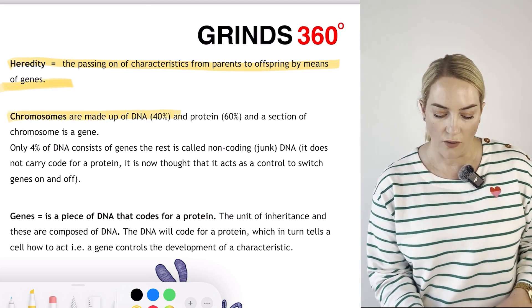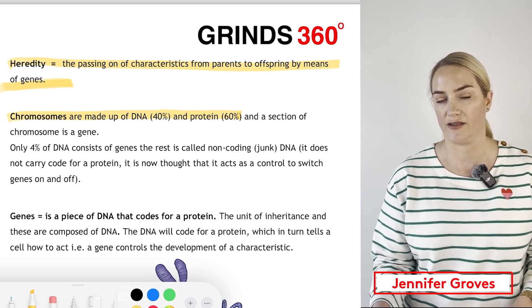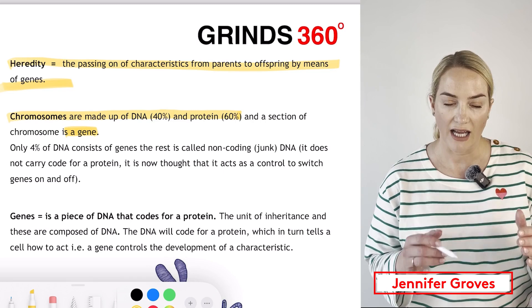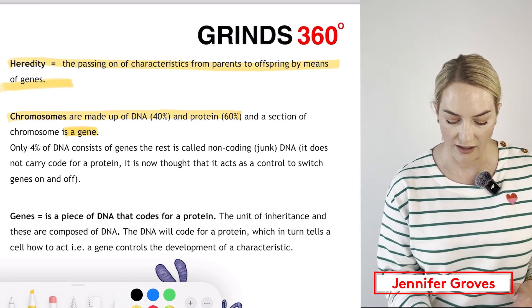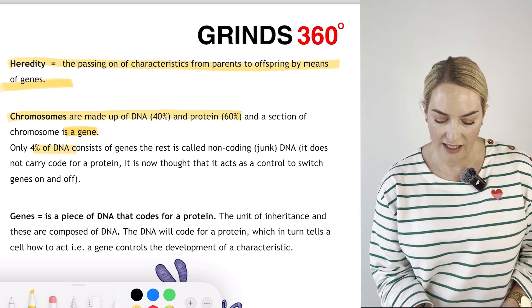Our chromosomes are made up of DNA and protein - 40% DNA and 60% protein. On that chromosome, these sections are called genes. Only about 4% of DNA consists of genes.